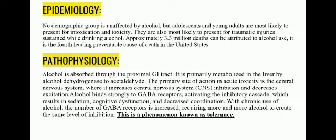Regarding the pathophysiology: alcohol is absorbed through the proximal GI tract and is metabolized in the liver by alcohol dehydrogenase enzyme to acetaldehyde. The primary site of action in acute toxicity is the CNS, where it increases CNS inhibition and decreases excitation, which may result in lethargy and other conditions. Alcohol binds strongly to GABA receptors, activating the inhibitory cascade, resulting in sedation, cognitive dysfunction and decreased coordination. In chronic alcohol use, the number of GABA receptors is increased, requiring more and more alcohol to create the same level of inhibition — a phenomenon known as tolerance.